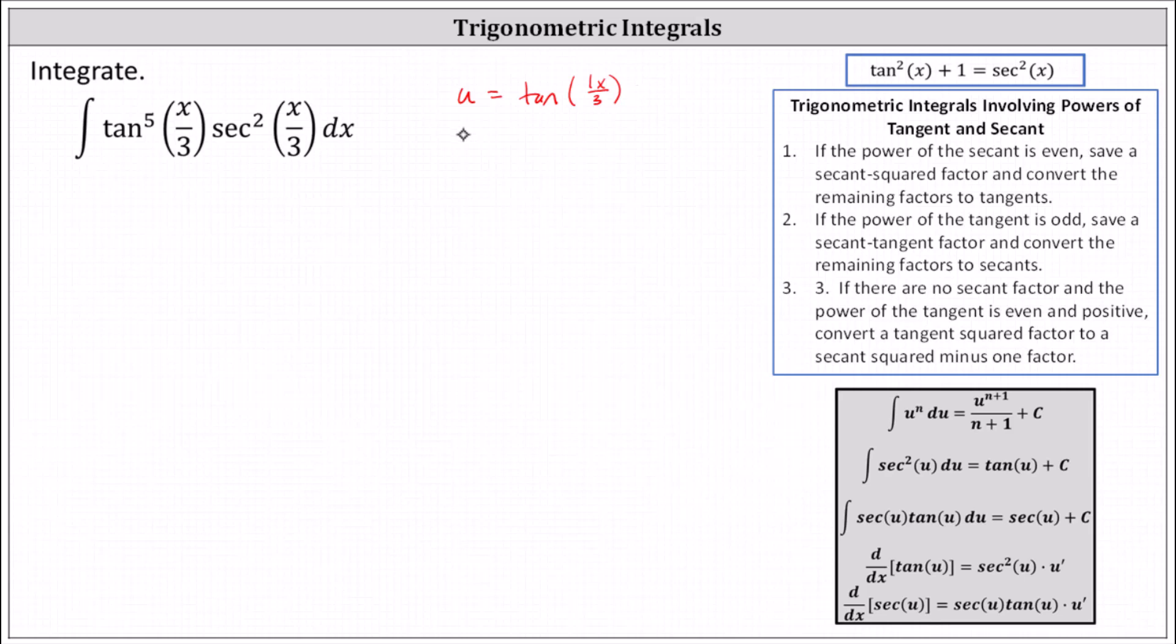And now we need to determine du. Du is the derivative of tangent of x divided by 3 times dx. Notice this requires a chain rule. The derivative is secant squared of x divided by 3 times one third, or one third secant squared of x divided by 3 times dx.